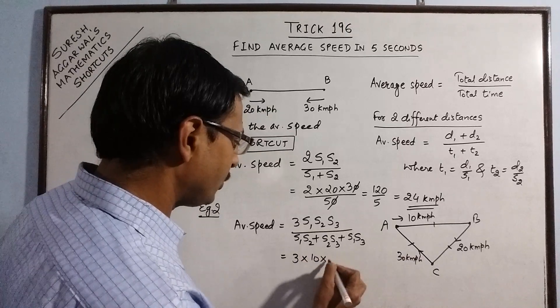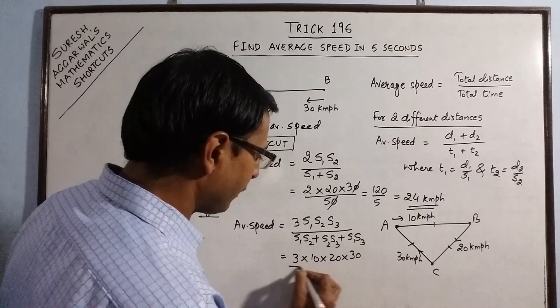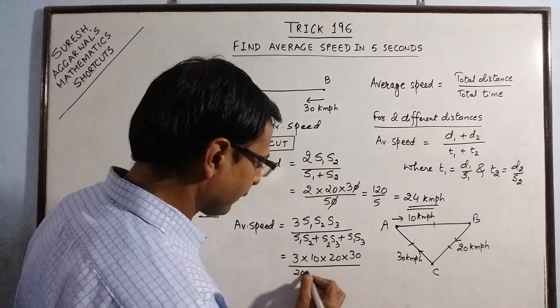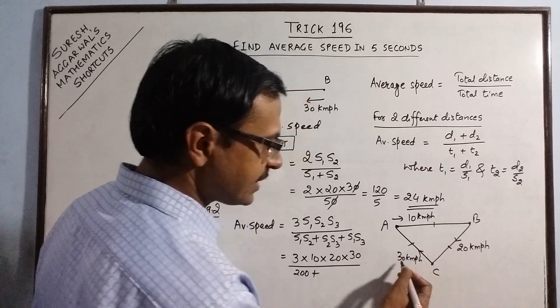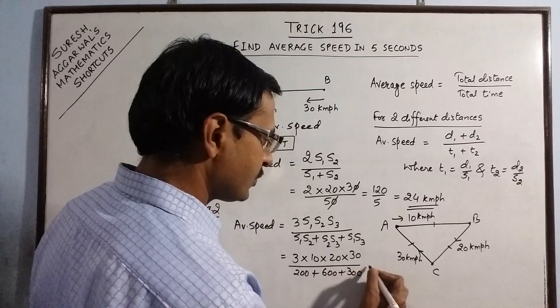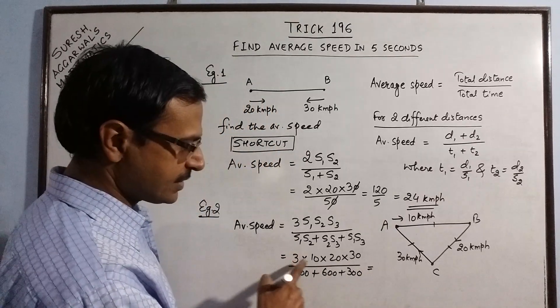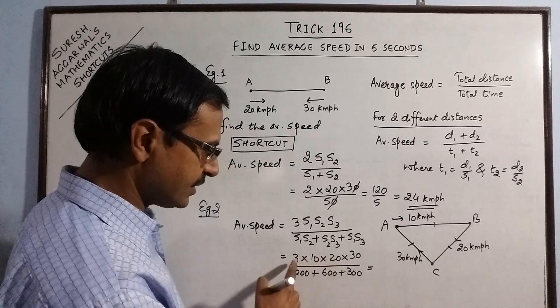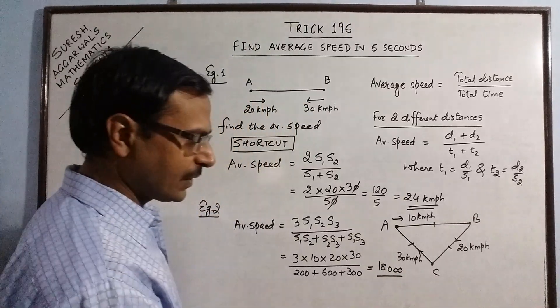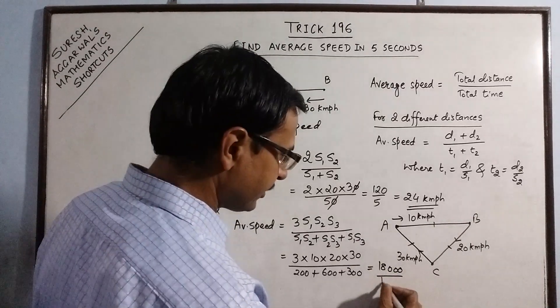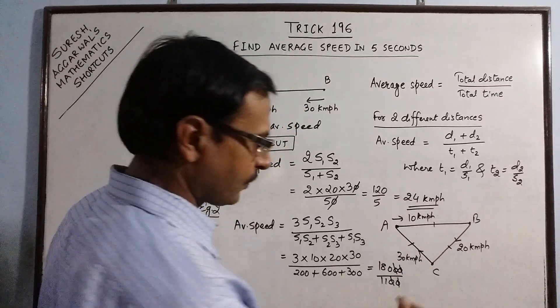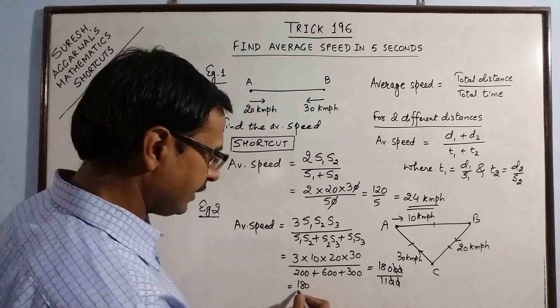Now, let us substitute this. 3 into 10 into 20 into 30 upon the product of S1 and S2: 200, S2 and S3: 600 and S3 and S1: 300. So, you have, this is 3, 2's are 6, 3's are 18, followed by 3 zeros and divided by 1100. So, your final answer will come by dividing 18000 by 1100.